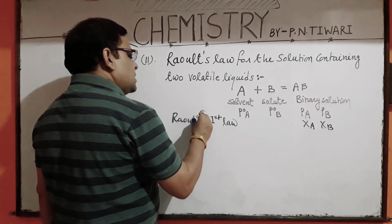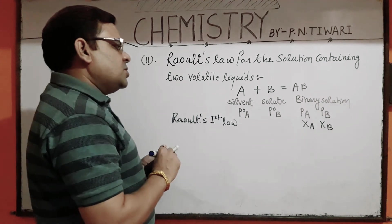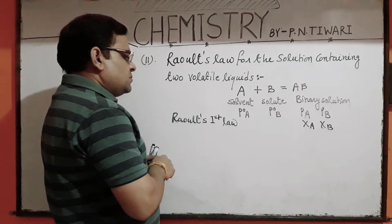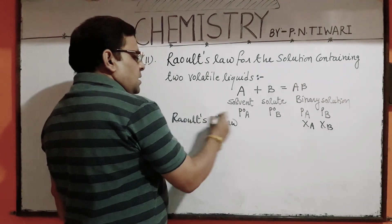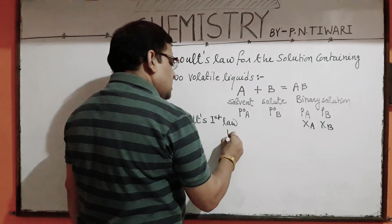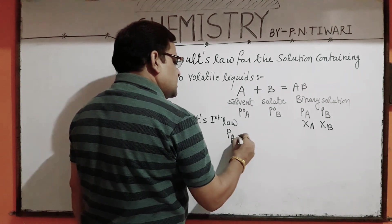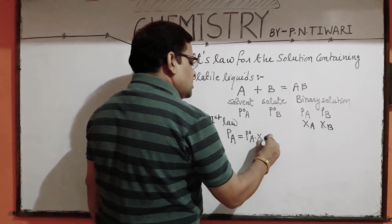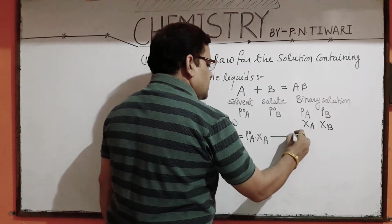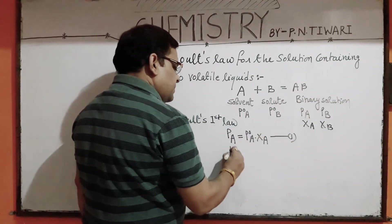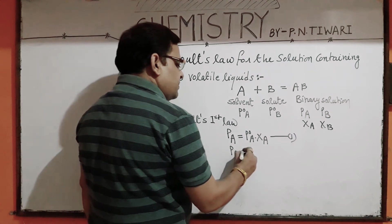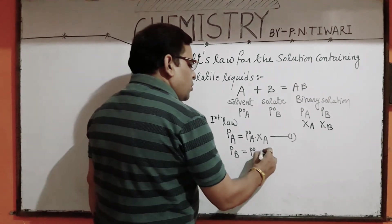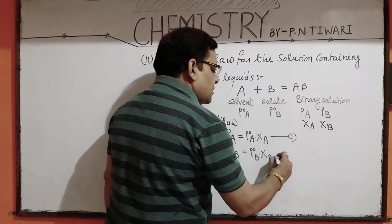According to Raoult's first law, the partial vapour pressure of solvent PA is equal to the product of the vapour pressure of pure solvent P0A and its mole fraction XA in the solution — that is equation one. Similarly, the partial vapour pressure of solute PB is equal to the vapour pressure of pure solute P0B multiplied by its mole fraction XB in the solution — that is equation two.